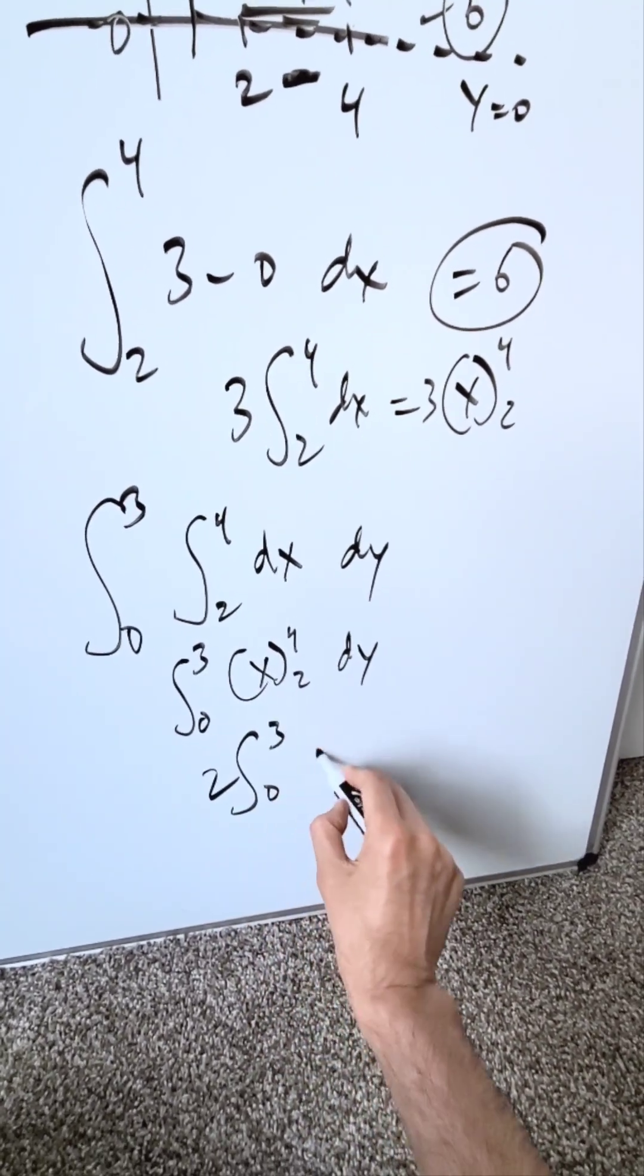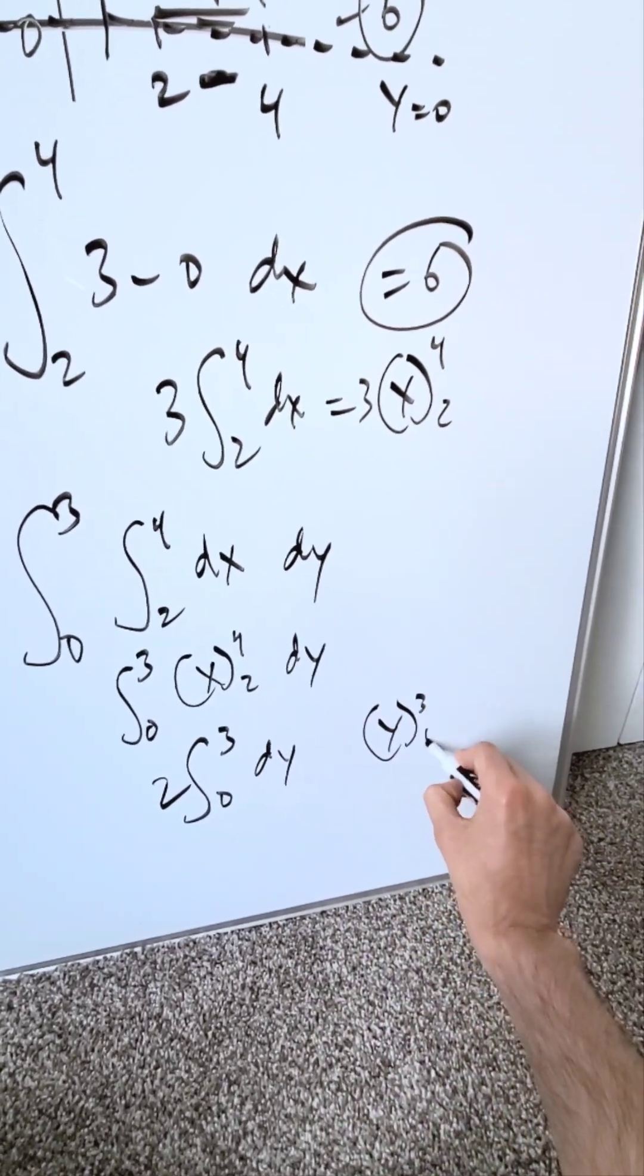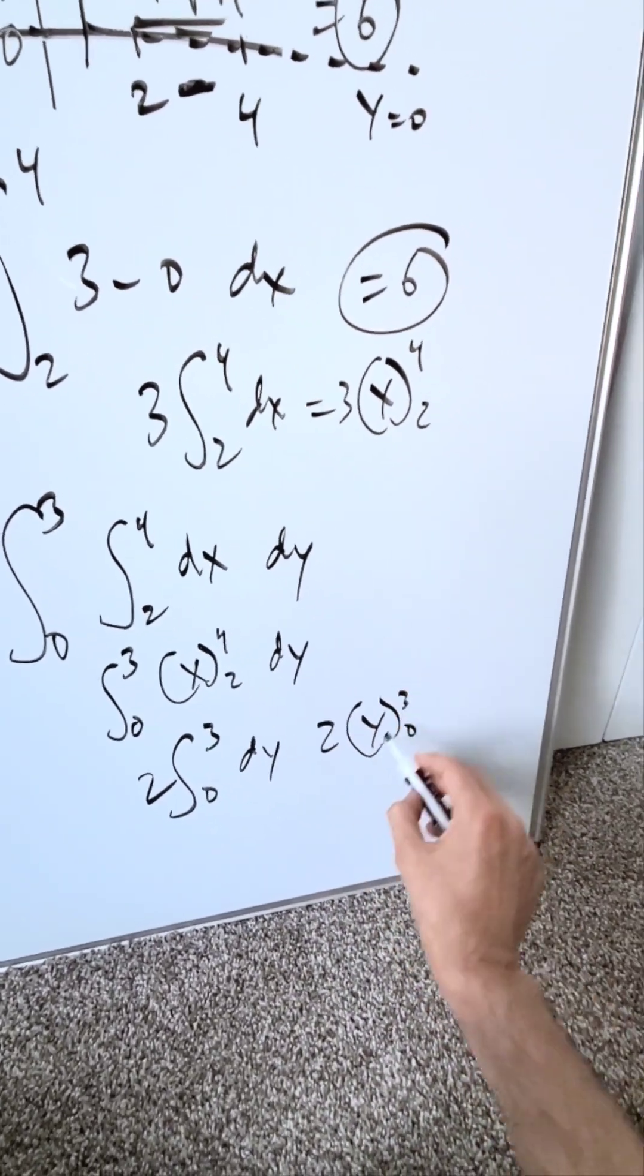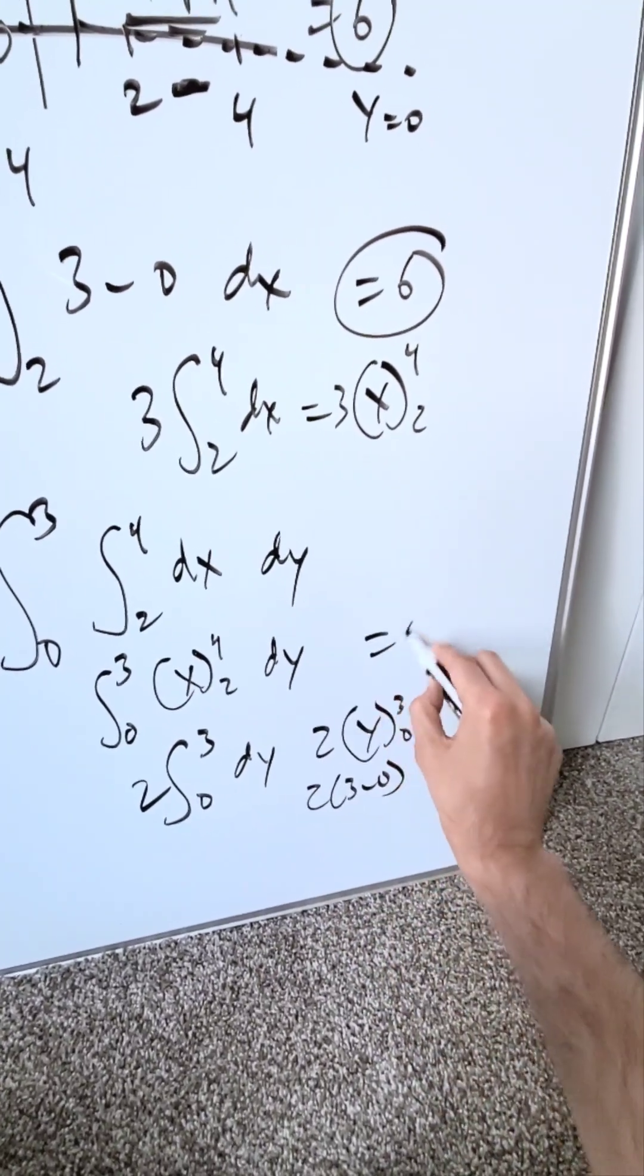Now you're pushing the 2 out, and you have 0 to 3 dy. The anti-derivative here is y from 3 to 0, and a 2 sitting outside. You'll get 2 times 3 minus 0, which is 2 times 3, and you'll have your area of 6.